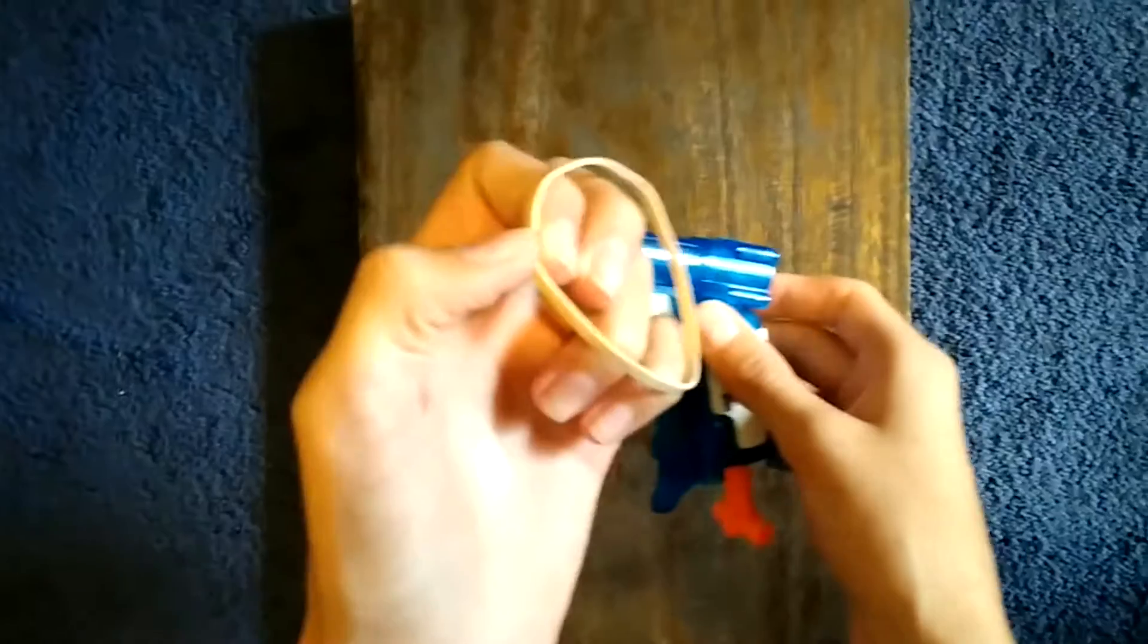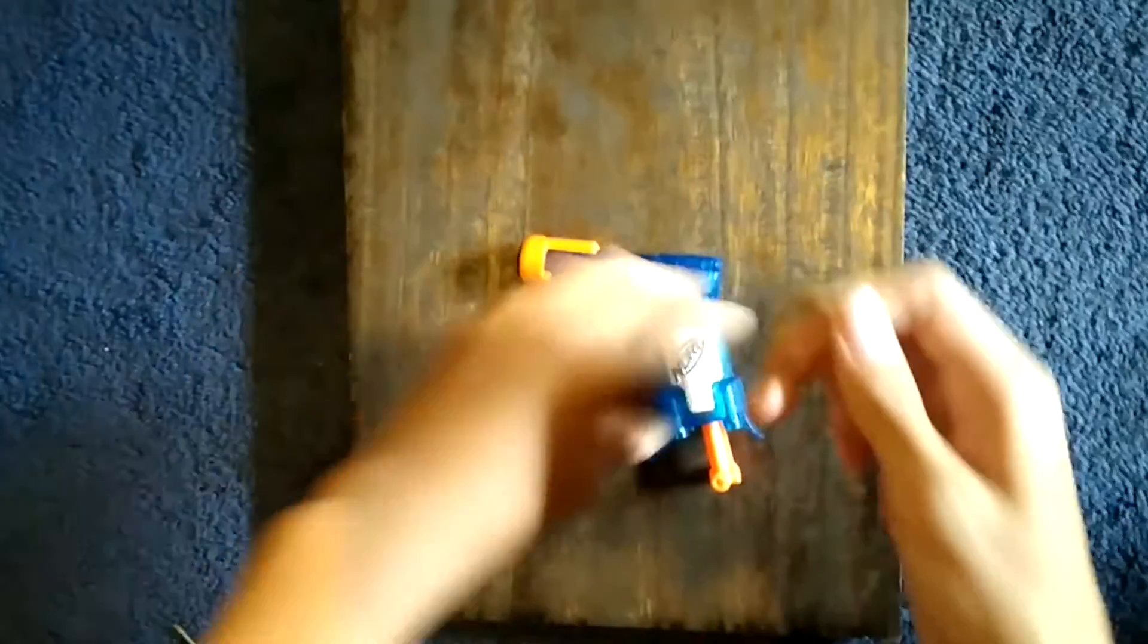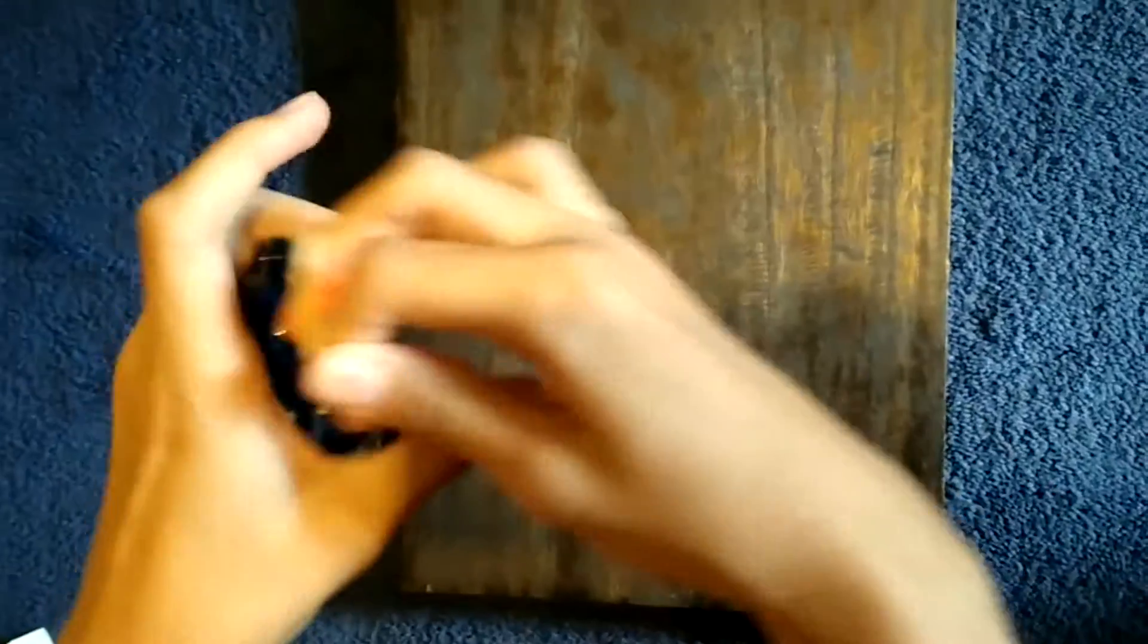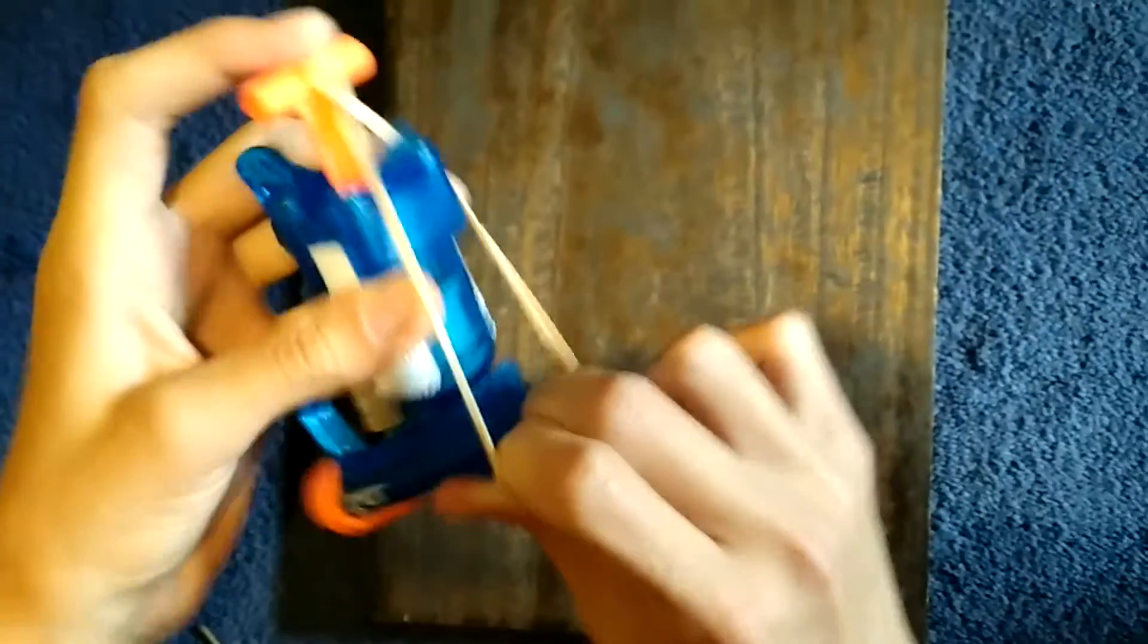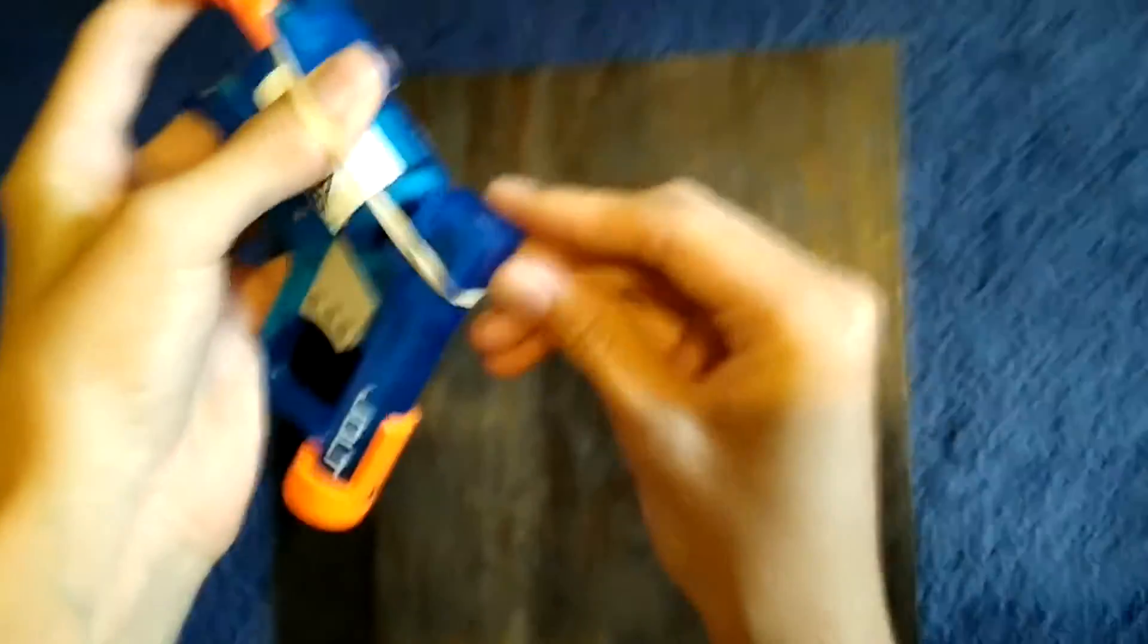Then with your rubber bands you want to just twist it like that and put it on the handle right here, like that on this little nub. Pull it back so that it's up to this notch.